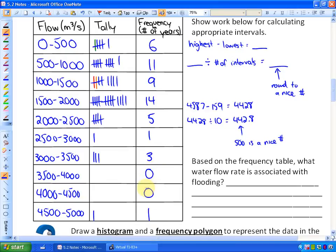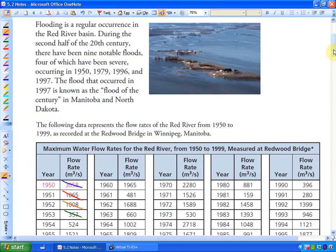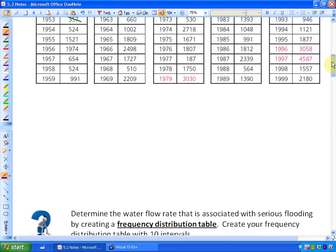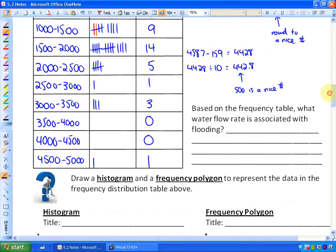is based on the frequency table, what water flow rate is associated with flooding? They suggested that there were, if you read the question, nine notable floods. So if we count the top nine here, or roughly the top nine, this is our top ten here. So roughly it would be 2,000 plus. So what water flow rate, 2,000 meters cubed per second and greater. That's associated roughly with flooding.